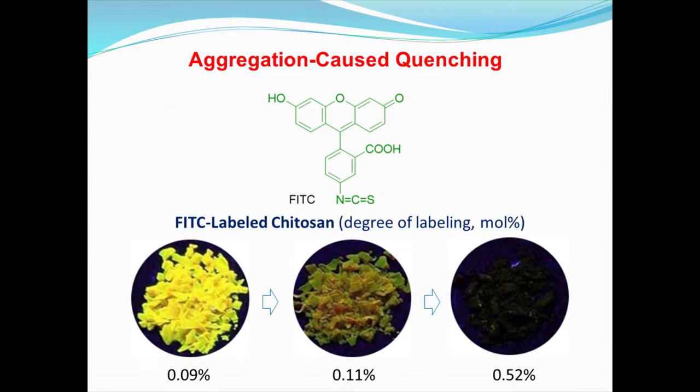FITC is a green fluorescent dye that has bright fluorescence in solution, and chitosan is a biopolymer that is non-emissive. If we use FITC to label the chitosan with an increased degree of labeling, the polymer fluorescence is quenched from bright yellow to completely dark. This is absolutely frustrating because we're expecting an opposite result. At this moment, let me bring you to our unique solution: the bright and colorful luminescence with aggregation-induced emission.